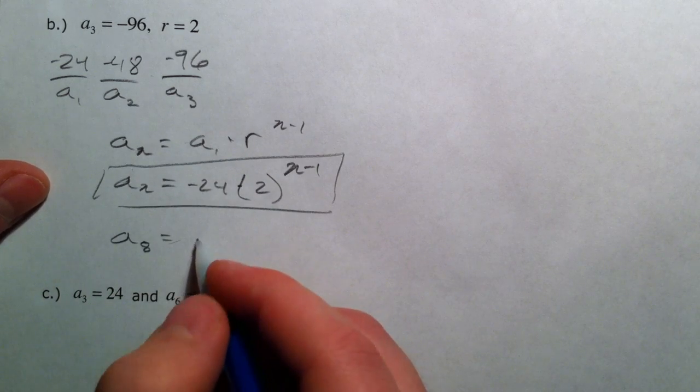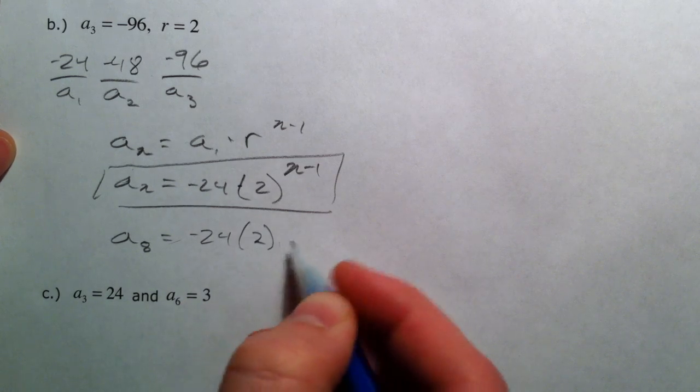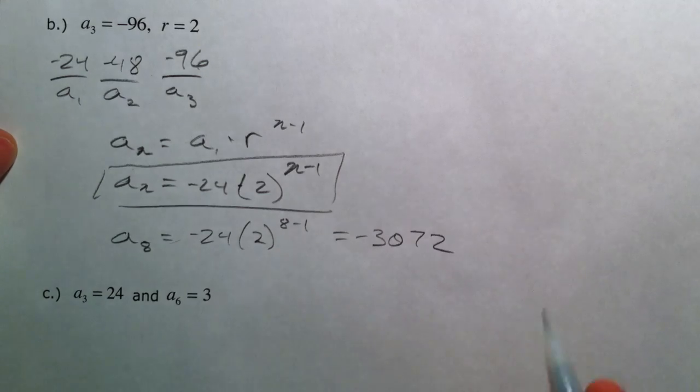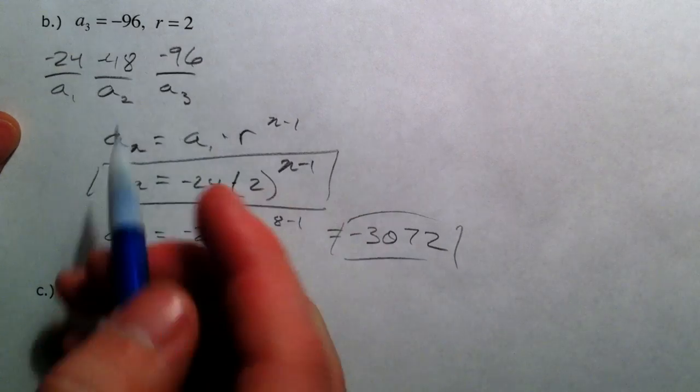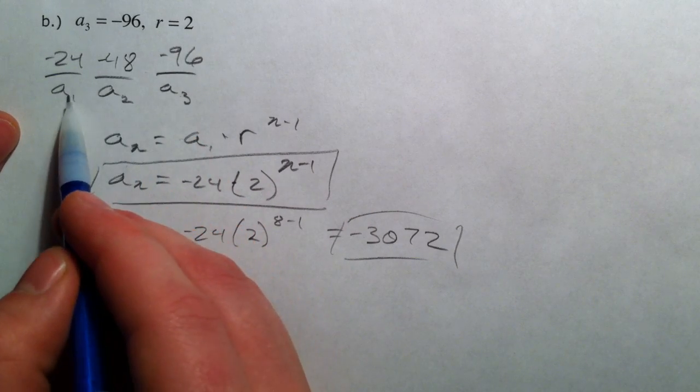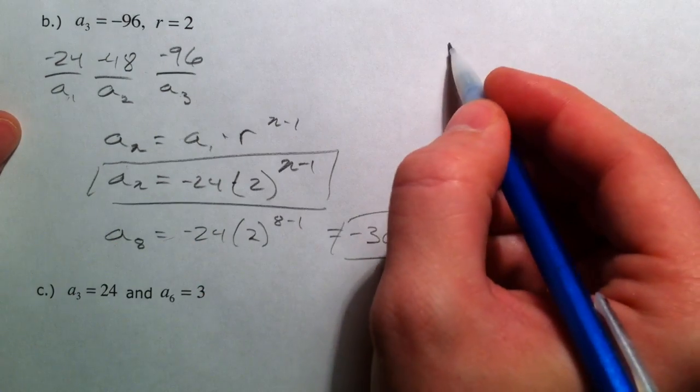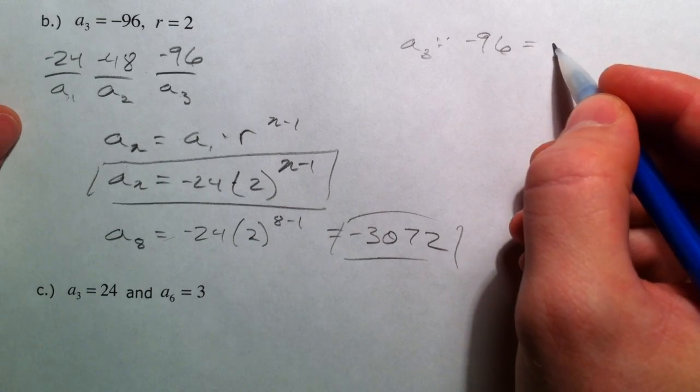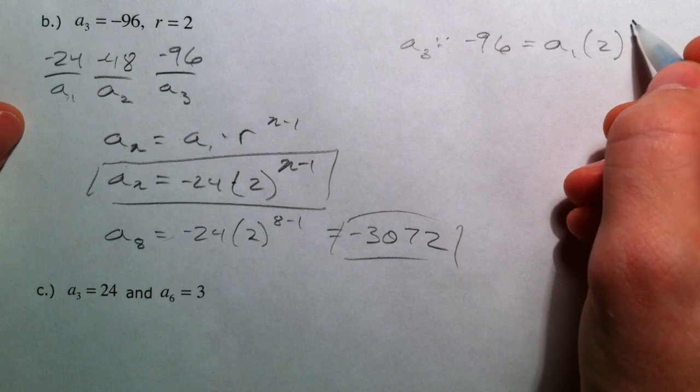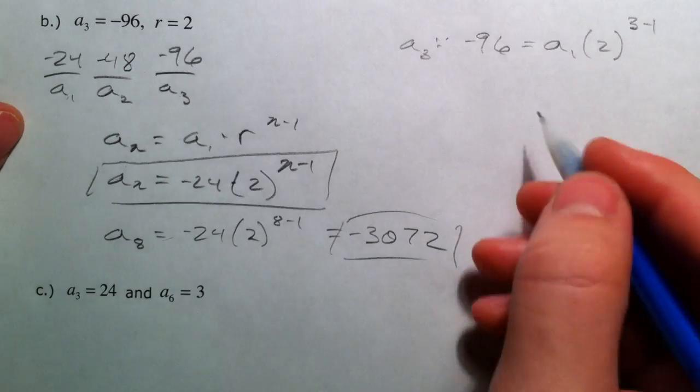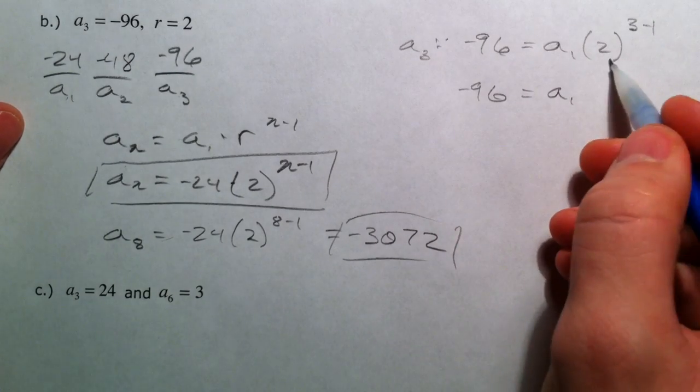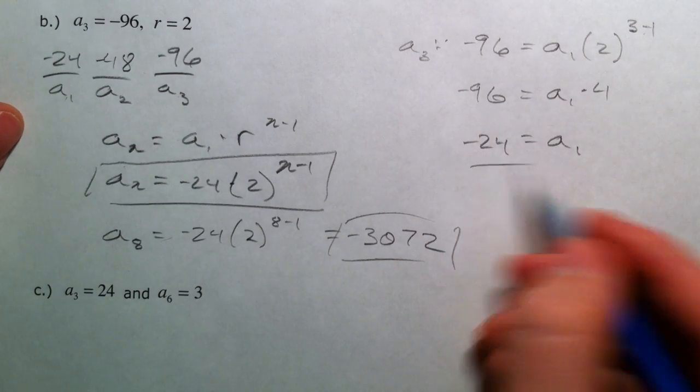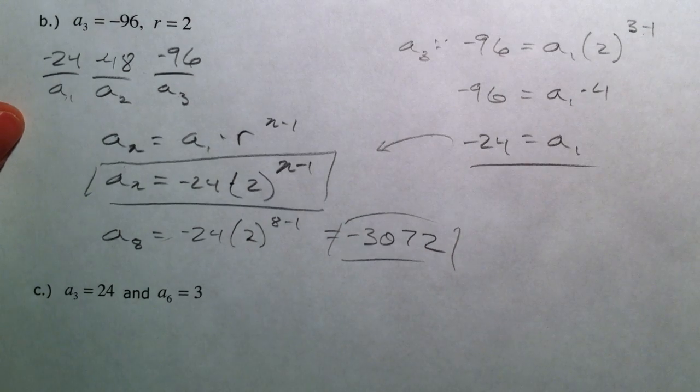So a sub 8 is negative 24 times 2 to the 8 minus 1, or negative 3072. So we just went backwards. We used our common ratio to find, go back and find the first term. We can also use our a sub 3 being negative 96 equaling whatever a sub 1 is times 2 to the 3 minus 1 power. And so you get negative 96, a sub 1 equals 2 to the 2nd times 4. And so a sub 1 is negative 24 after you divide by 4. And that's how you might find the equation if you had a higher term and had to find it that way.